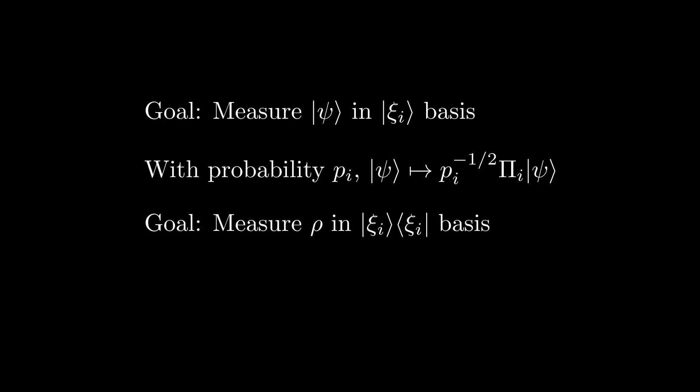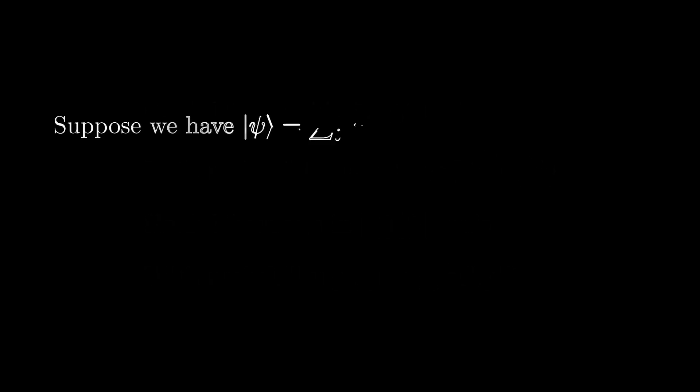Equivalently, if we instead have a density matrix rho, we represent measurement by conjugating rho by projection operators, and then scaling the outcome by p_i to the minus one power. But what exactly determines what these probability values p_i are? Well, you may recall from the first few lectures that if we expand out a state vector psi in the psi basis, we have that the absolute value of the coefficient squared of a given psi vector gives us the probability of measuring this outcome. If our state is not given in the psi basis, we can of course compute this coefficient by simply taking the inner product of the state psi with the corresponding psi vector.